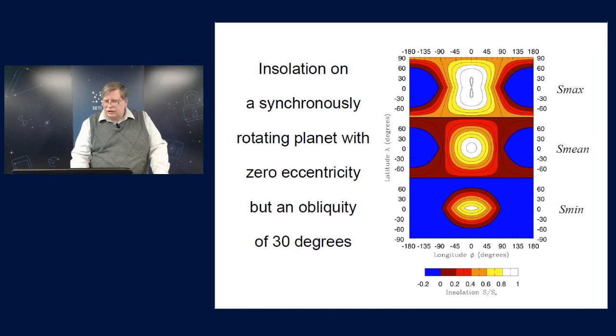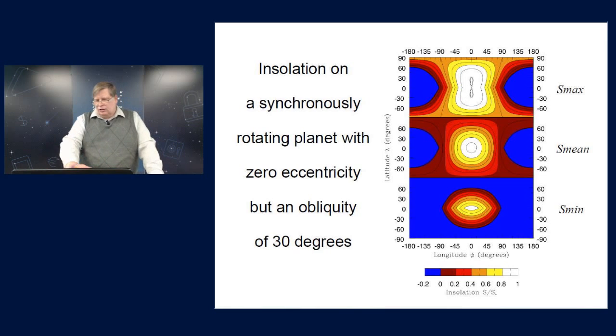And you can see that the insolation is very high on one side of the planet, but it vanishes on the far side. The same goes pretty much for the mean insolation, but if you look at the minimum insolation down here in the bottom panel, you see that it vanishes over most of the planet, except that there's a region near the mean sub-solar point, the front of the planet, which is in permanent daylight.